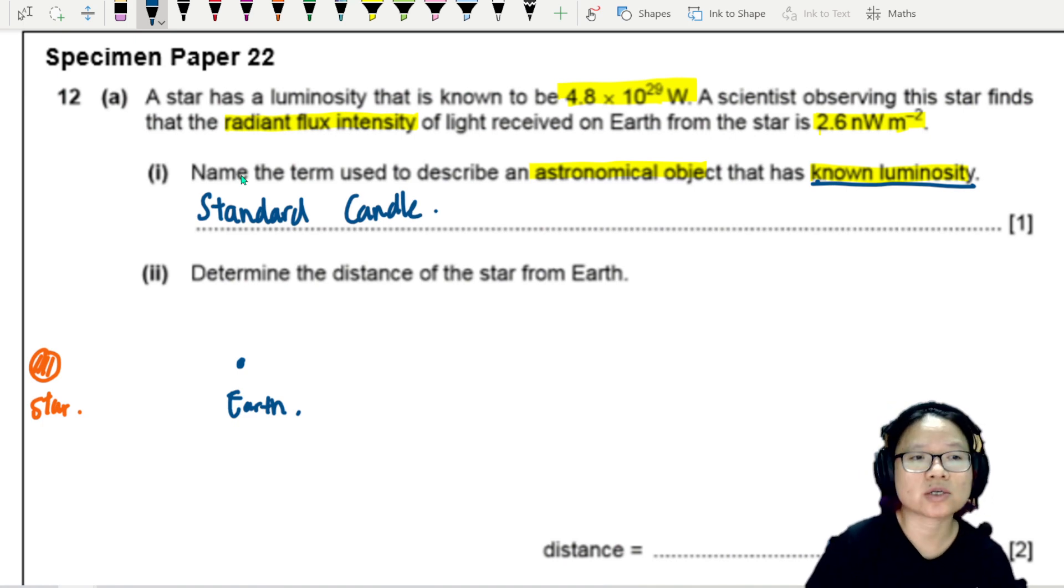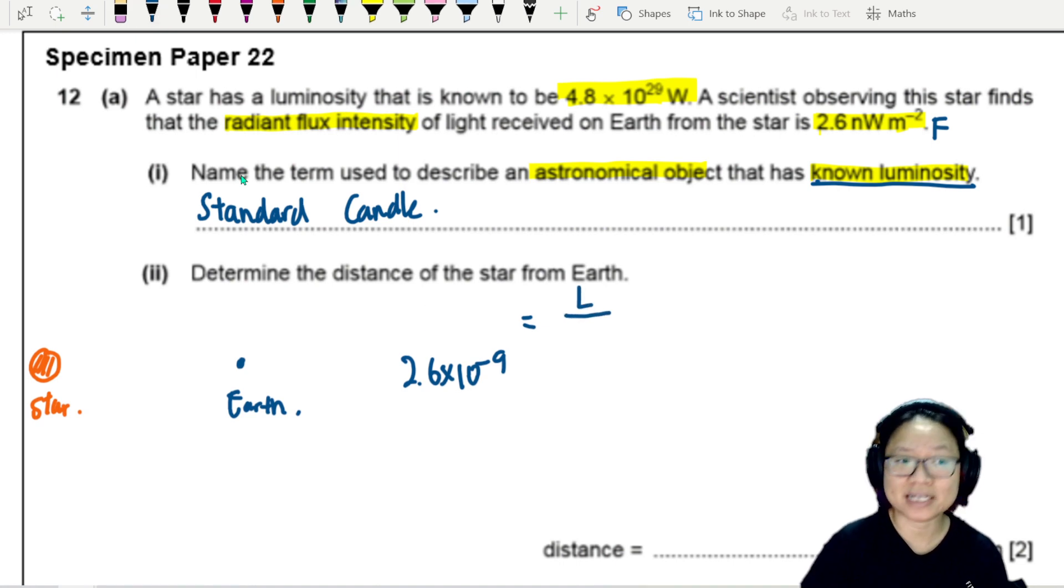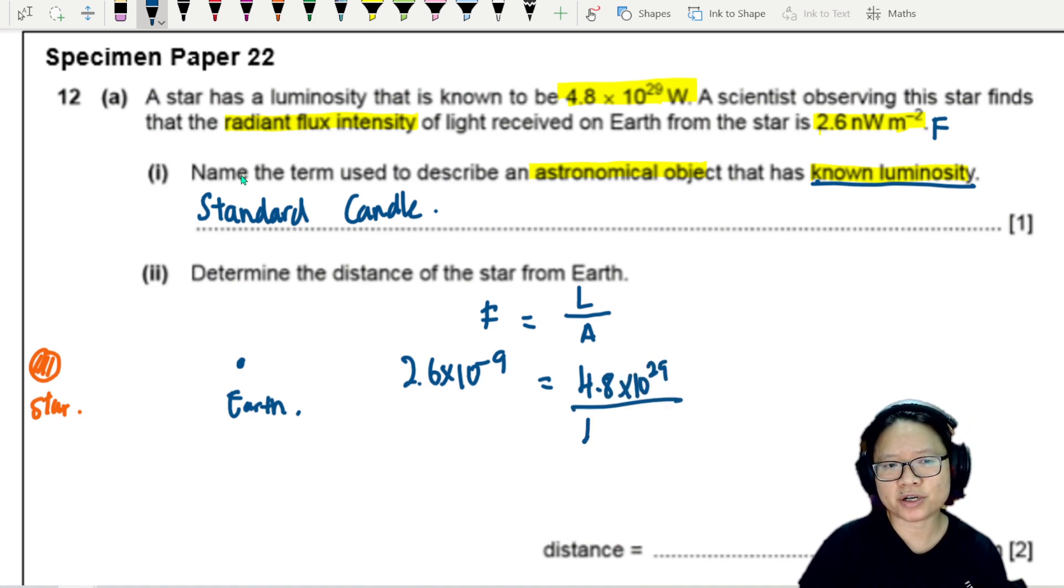Determine the distance of the star from Earth. We have a radiant flux intensity of 2.6 times nano, so nano is 10 to the power negative 9. This equals L over area. I know the luminosity is 4.8 times 10 to the power 29, and the area is 4πd².